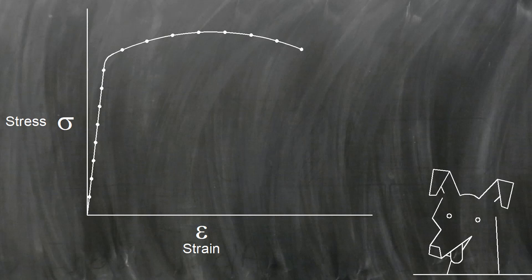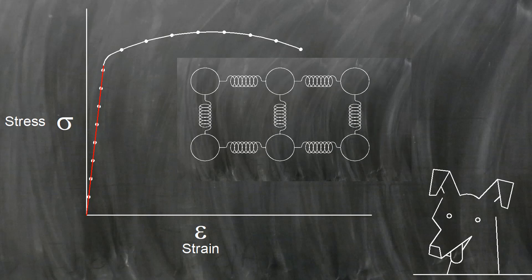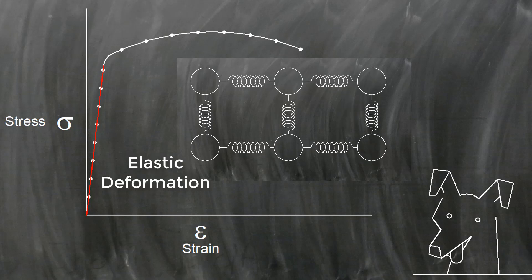Now let's take a closer look at that diagram. You can clearly see two different behaviors here. At first the relationship between stress and strain is proportional or linear. Do you remember elastic deformation? That's what's happening here.